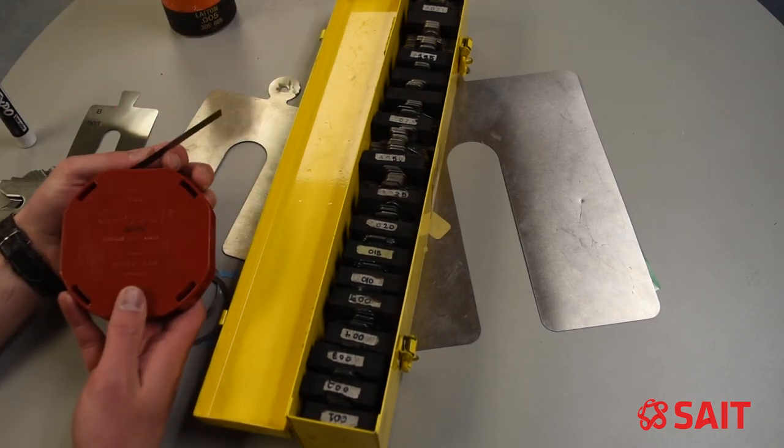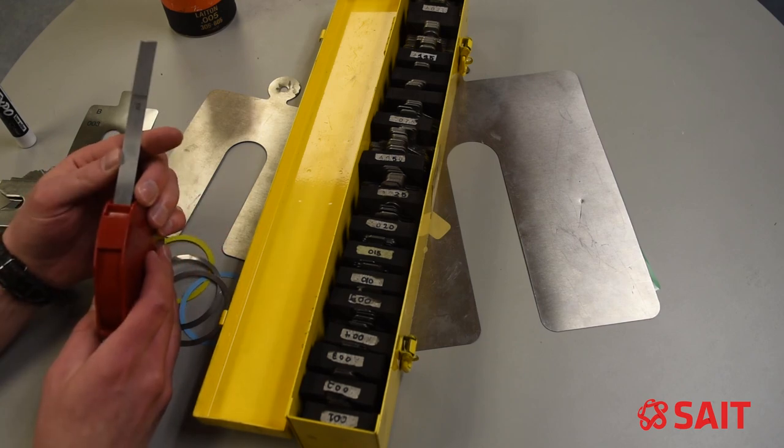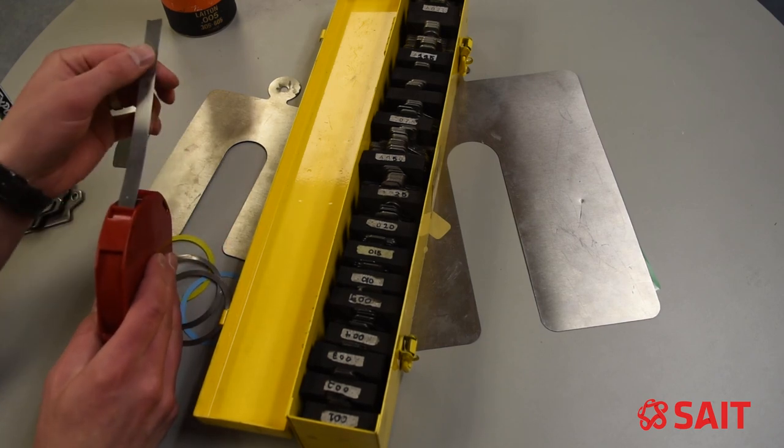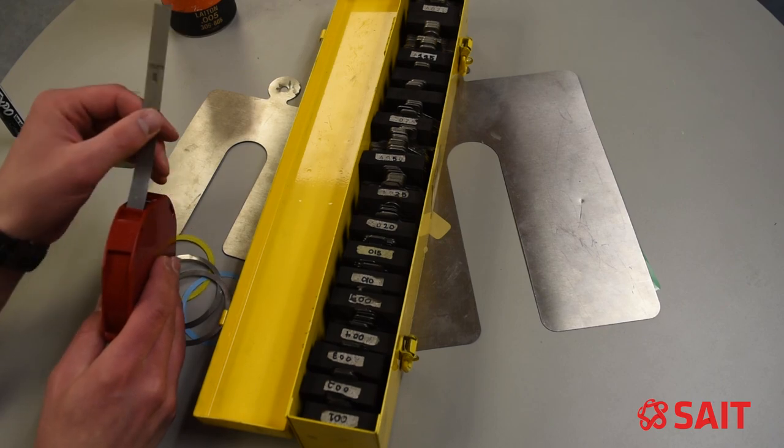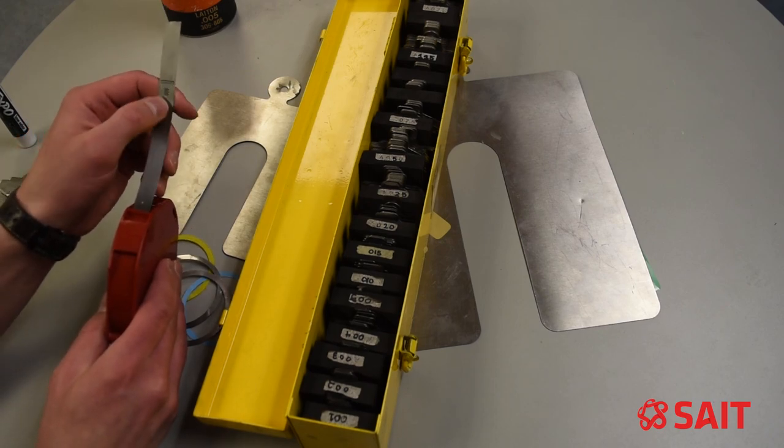This is an example of another type of shim. This is a feeler gauge style, where it's about half an inch wide and then it has printed on it the thickness.